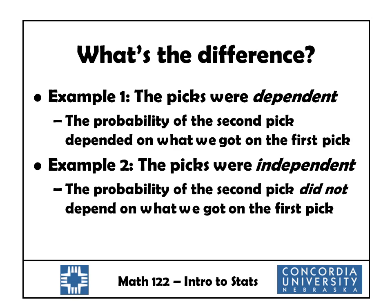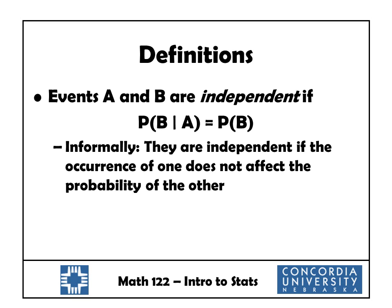In the second example, the picks were independent, which means the probability of the second pick did not depend on what we got on the first pick. After I chose that first person, I replaced it — everything was right back to where it started. The fact that I had already chosen one person had no effect on the probability of the second pick.